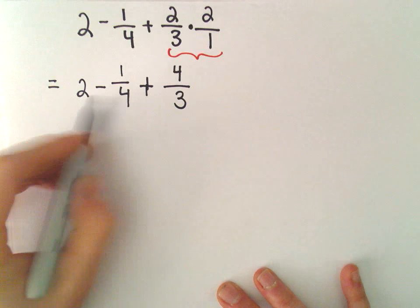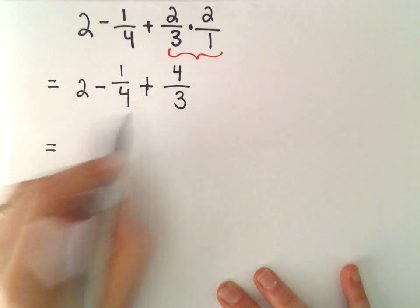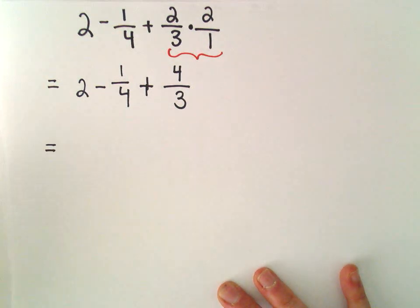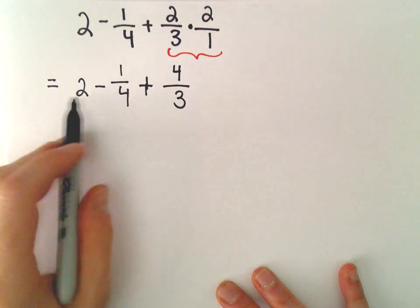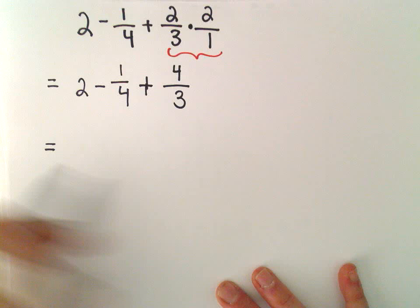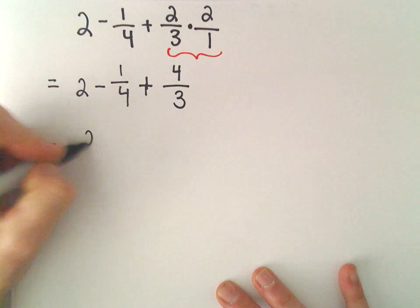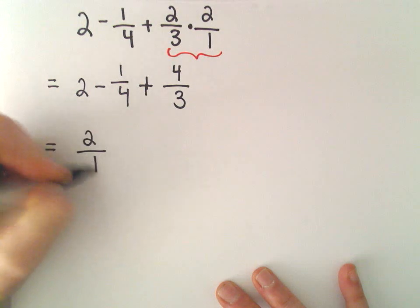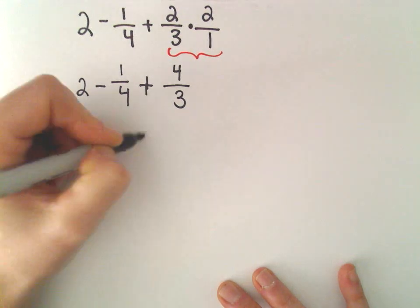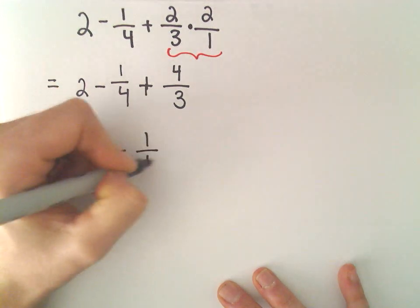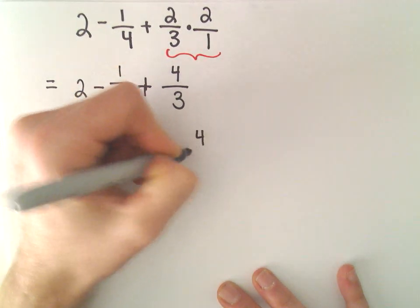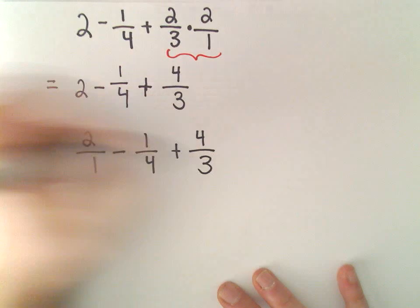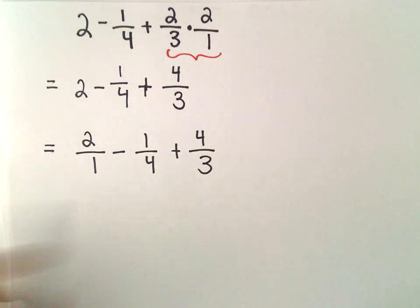Now we have just addition and subtraction, but we have it with fractions. We can go left to right in this case, but we have to get common denominators before we can add and subtract.